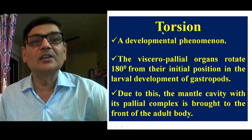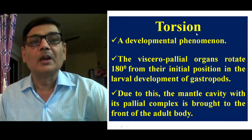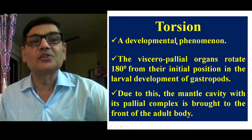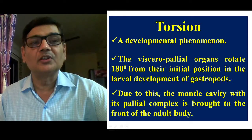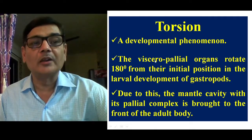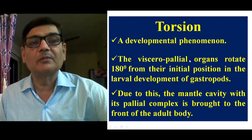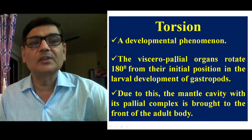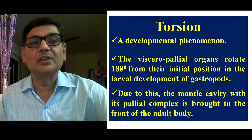This happens because of torsion. Torsion is a developmental phenomenon that occurs only in gastropod mollusks. In this process, the visceral and pallial organs — such as the alimentary canal, heart, kidney, gonads, gills, and osphradium — rotate 180 degrees from their initial position during larval development.